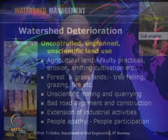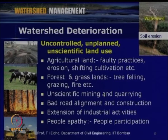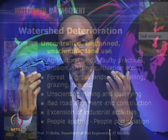Wherever industrial activities are present, if not planned properly, they can lead to deterioration of the watershed. Another major issue is people apathy — people are not concerned about what is happening in their locality or watershed. As mentioned, for appropriate management of a watershed, people participation is essential. People should feel that the various developmental activities taking place within the watershed are for the development and betterment of the people in that area, and should be actively involved in the watershed management implementations and maintenance of the system.